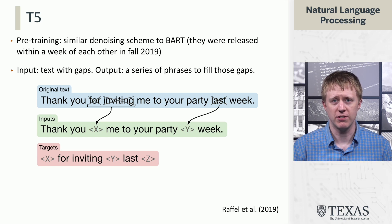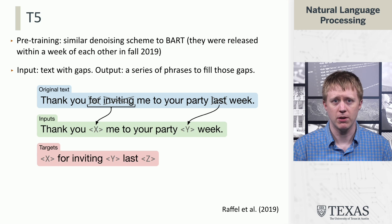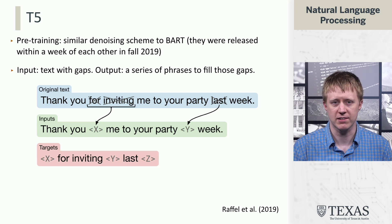T5's pre-training objective is very similar to BART's. It doesn't have as many of the bells and whistles, but it has the important component: we take original text, mask out pieces of it, use that as our input, feed it into a transformer, and in a sequence-to-sequence fashion attempt to predict targets. One key difference from BART is that unlike BART, where we predict the entire original text as the output, here we only predict the masked sequences.